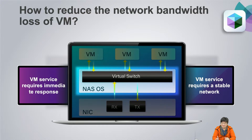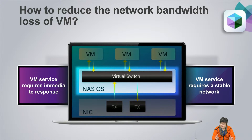Now you can see the diagram. The network card is connected with the virtual switch, and your VM service is also connected with the virtual switch. The virtual switch may cause a 20% network performance loss. So, how do you fix it?